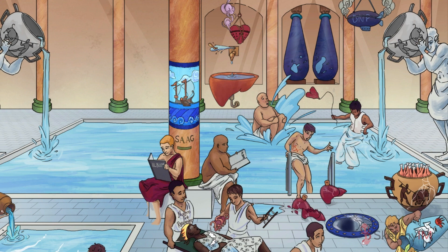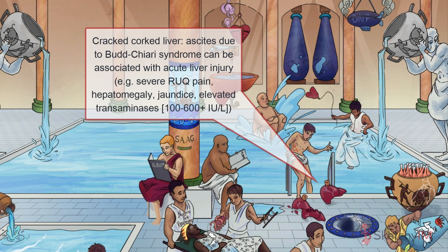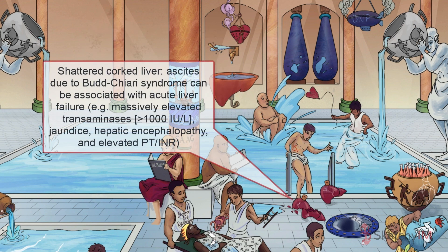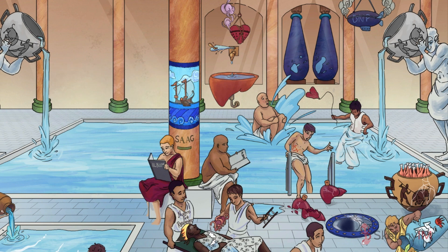In patients with acute Budd-Chiari syndrome, symptoms develop over a few weeks. Expect to see severe right upper quadrant pain, hepatomegaly, jaundice, and ascites. Variceal bleeding may occur as well. On labs, elevation of serum aminotransferases occurs due to ischemic hepatocellular damage from vascular congestion. Budd-Chiari can also present with acute liver failure, characterized by massively elevated transaminases, jaundice, hepatic encephalopathy, and an elevated PT/INR.